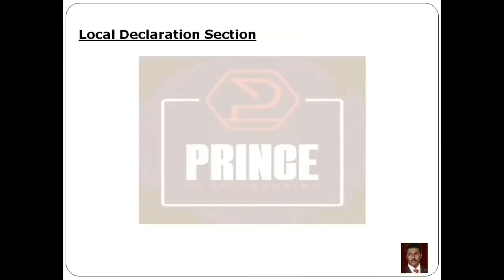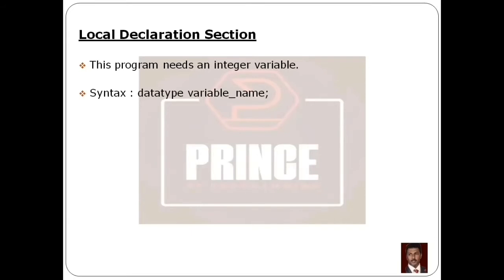The next section inside the main function is the Local Declaration Section. In the local declaration section, we declare variables for the program. Since we need to read an integer number, we declare an integer variable. The syntax for variable declaration is: data type, space, variable name, then semicolon.